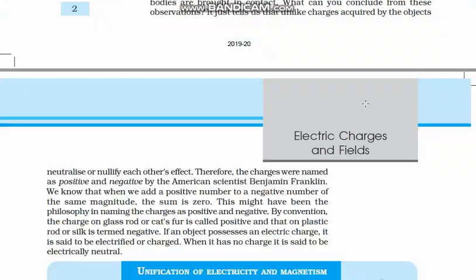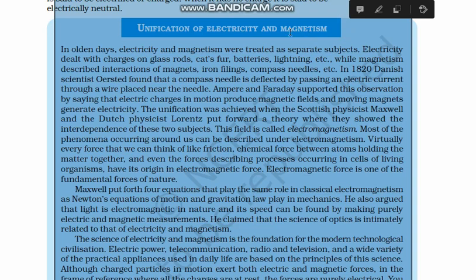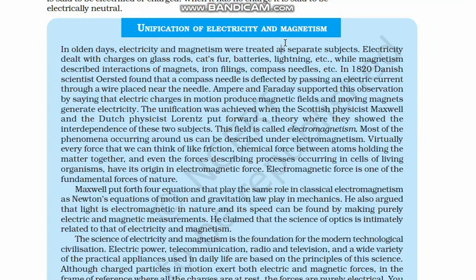We also discussed the topic of unification of electricity and magnetism. Electricity and magnetism are unified — they are not two separate things. In earlier classes, you have seen that electricity passed through a circuit wire can make an iron nail magnetic.